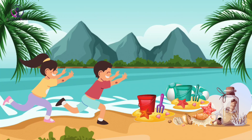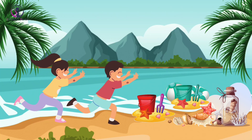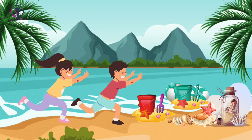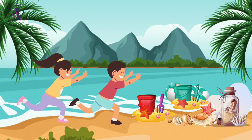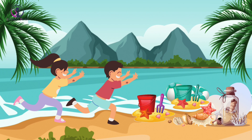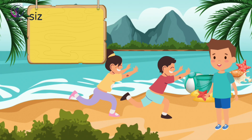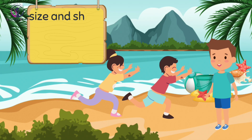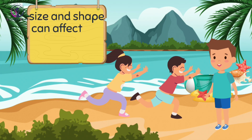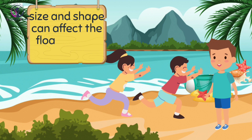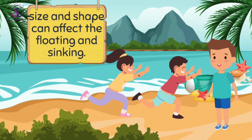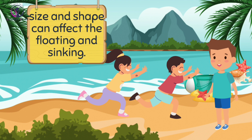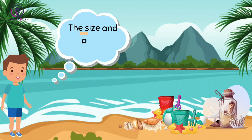His friends were amazed at Ali's experiment and they wanted to try it too. They ran to the shore to collect their own objects and conducted their own experiments. Ali happily shared his materials with his friends, and they continued to learn about buoyancy and how size and shape can affect the floating and sinking properties of objects.